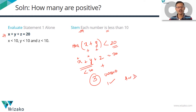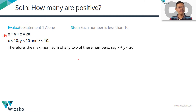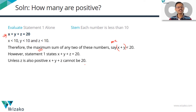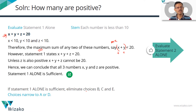Answer choices are down to A or D. To summarize: each of x and y is less than 10, the max sum for x and y is less than 20. The sum of all three is 20, which cannot happen without z contributing positively. So x, y, and z are all positive. We have a unique answer from Statement 1 — one alone is sufficient. Rule out B, C, and E. We are down to A or D.